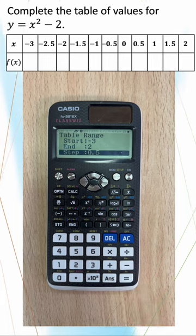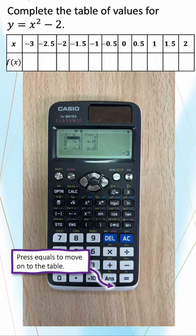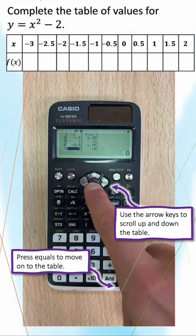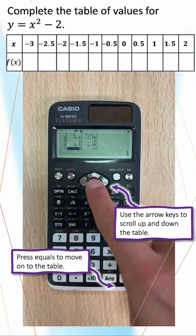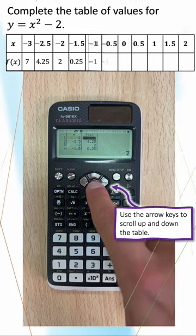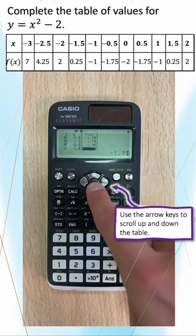Press equals, and now you have your table of values. The fx column tells you your table of values, and you fill that in in the exam question. You can now use this to plot a graph of that function.